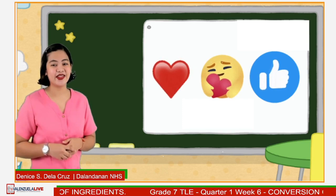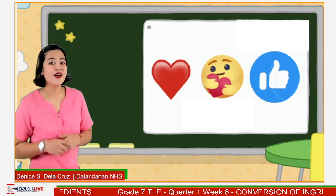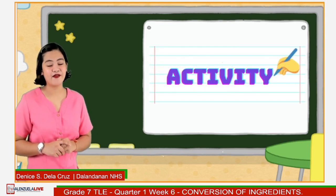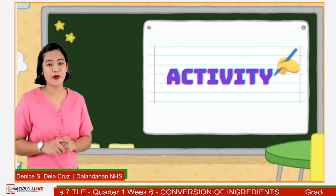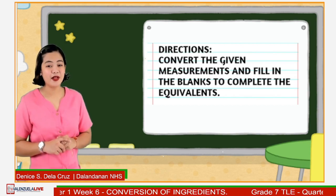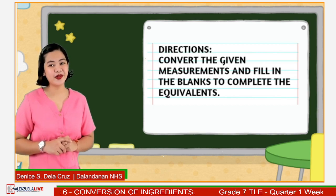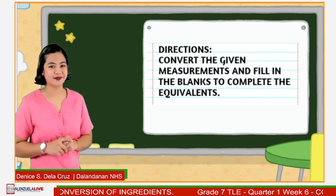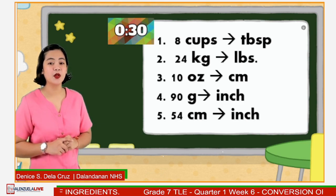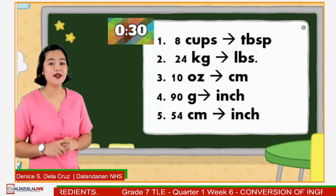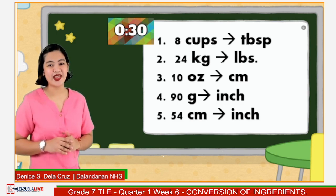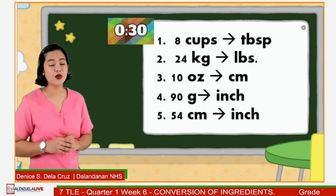To check your understanding of our lesson, let us have another activity. Convert the given measurement and fill in the blanks to complete the equivalents. Key in your answers in the comment box. I will give you another 30 seconds. The items are: 8 cups to tablespoons, 24 kilograms to pounds, 10 pounds to centimeters, 90 grams to inches, and 54 centimeters to inches.